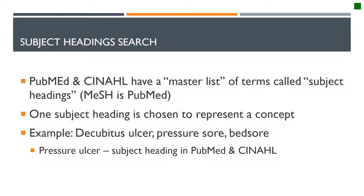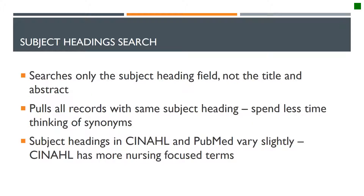Subject headings are words that are attached to an article to tell you what the article is about. The people attaching those subject headings aren't just pulling them out of the air — they come from a master list of words chosen to represent a certain topic. For example, the term pressure ulcer, which is the subject heading in PubMed and CINAHL, is used to represent the words decubitus ulcer, pressure sore, and bed sore. So even if an author wrote an article that didn't have the word pressure ulcer but had the word bed sore, that article will show up in the results when you do a subject heading search.